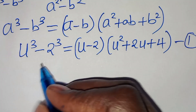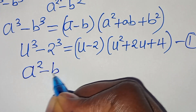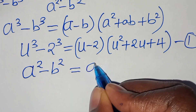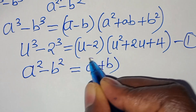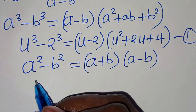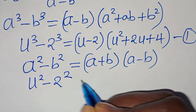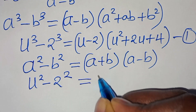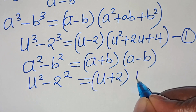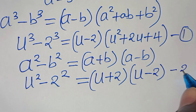And then we have the second part, which is the difference of two perfect squares, expressed as a squared minus b squared, which we can express as a plus b multiplied by a minus b. So u squared subtract 2 to the power of 2 can be expressed as u plus 2, then u minus 2. Let's call this equation 2.